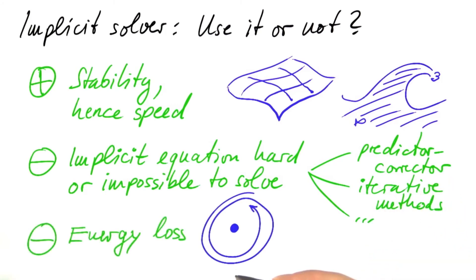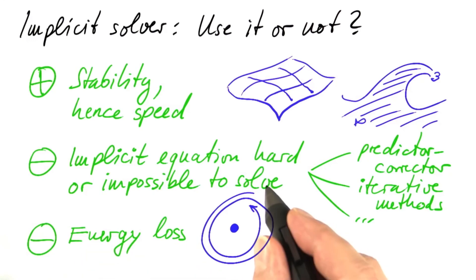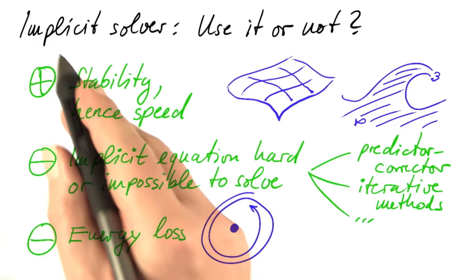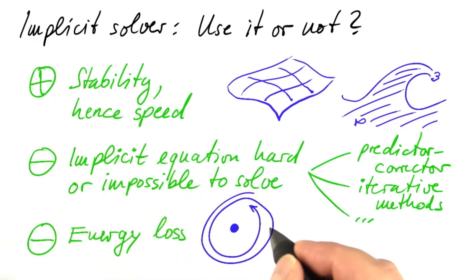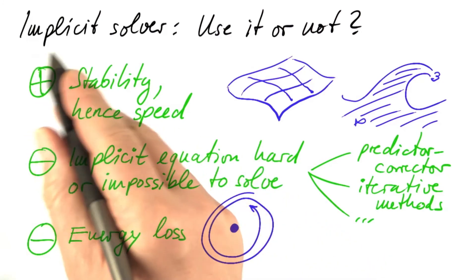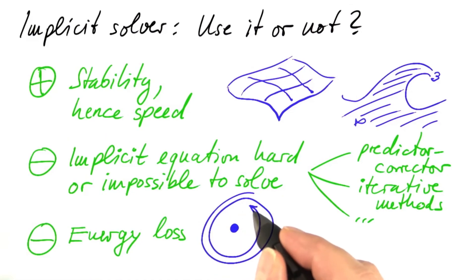The second disadvantage of implicit solvers is that most of them tend to lose energy in physical simulations. We saw that the Forward-Euler method, an explicit solver, increased the energy. Implicit solvers tend to work the other way around — they tend to lose energy.